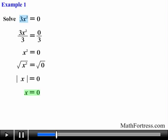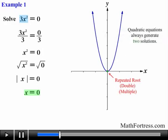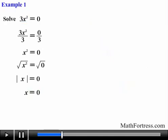If we were to graph the left hand side of the equation we would obtain the following graph. Notice that the parabola touches the x axis once. This means we are dealing with a repeated root, also known as a double or multiple root. Remember, quadratic equations always generate two solutions. In this case we have a repeated root at x equals 0, which is why the graph touches the x axis only once. Every quadratic equation of this form has 0 as its solution.